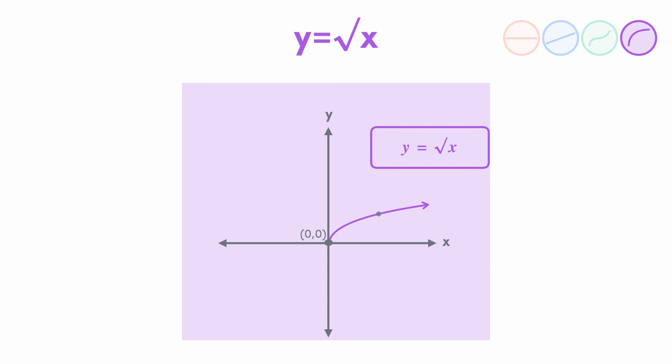And after we sketch it, as usual, remember to label a point, say, when x equals 4, y equals root 4, which is 2, and of course the intercept of 0, 0.